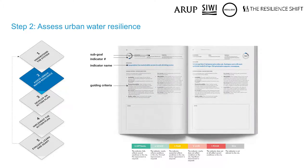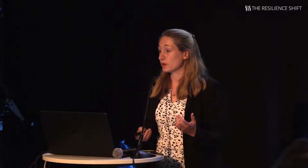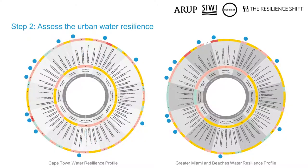Step two is around assessing the urban water resilience and diagnosing the areas of strength and the areas for improvement. On screen are two water resilience profiles — one for Greater Miami and the beaches and one for the city of Cape Town.